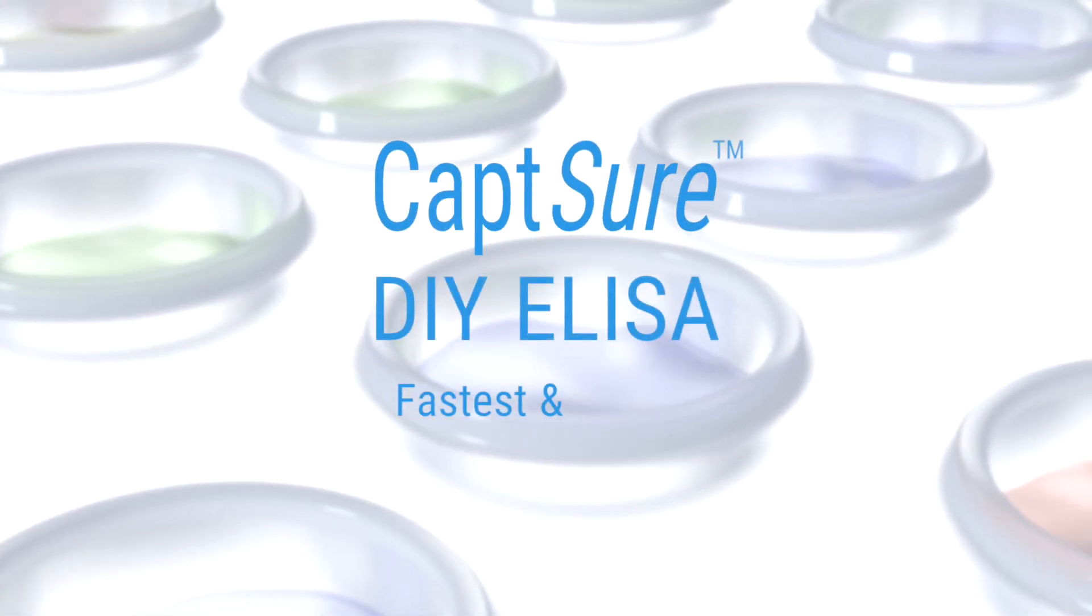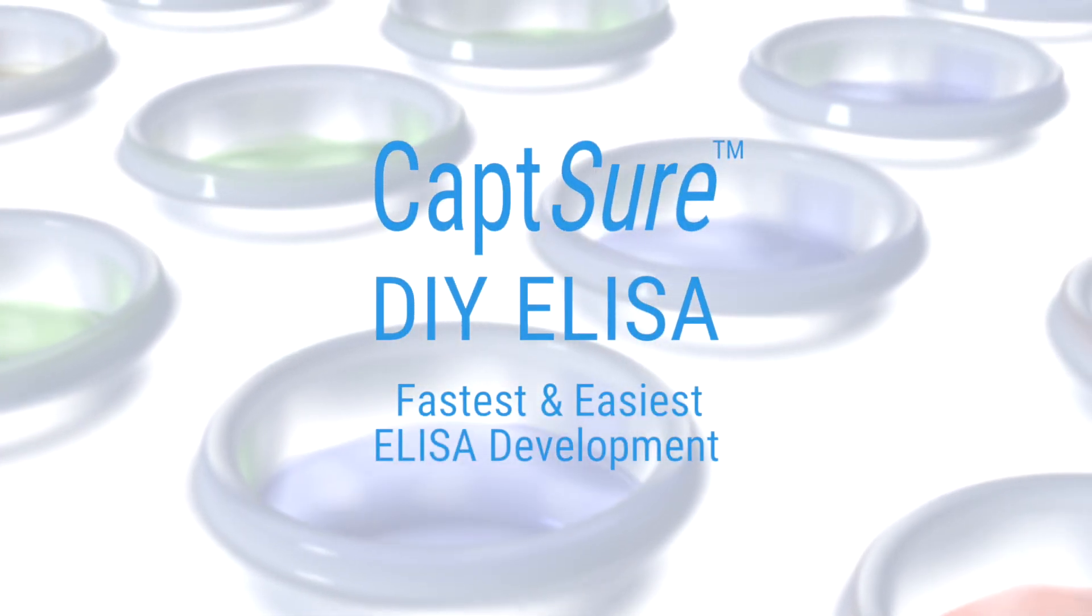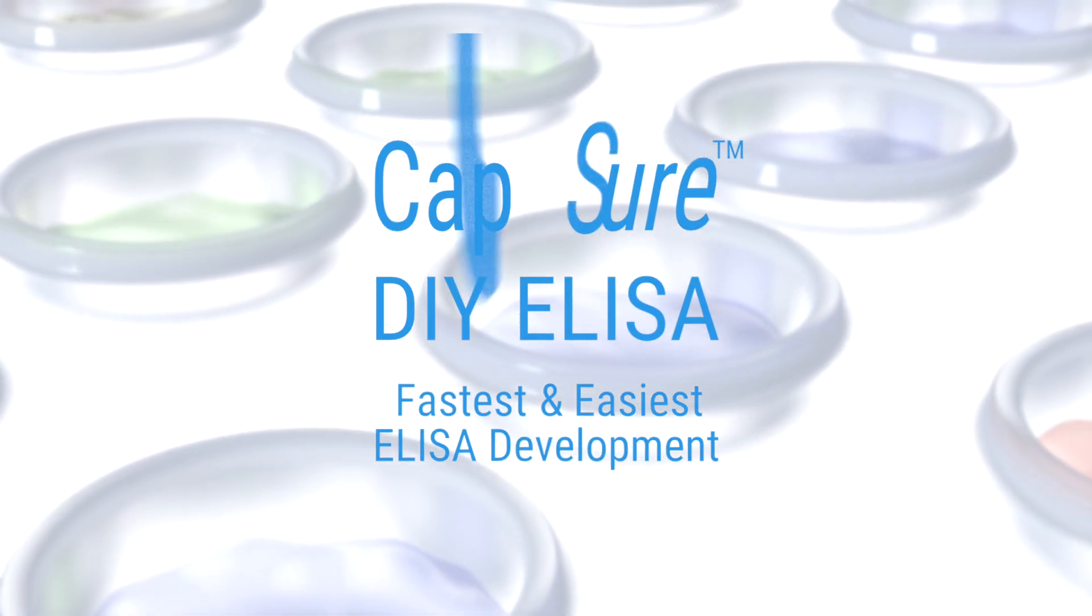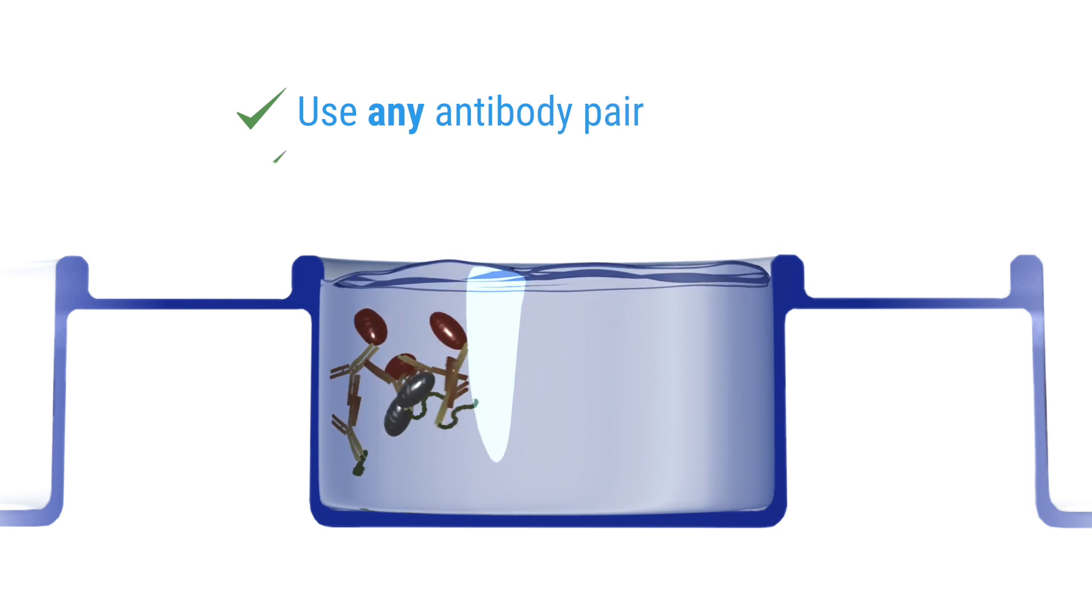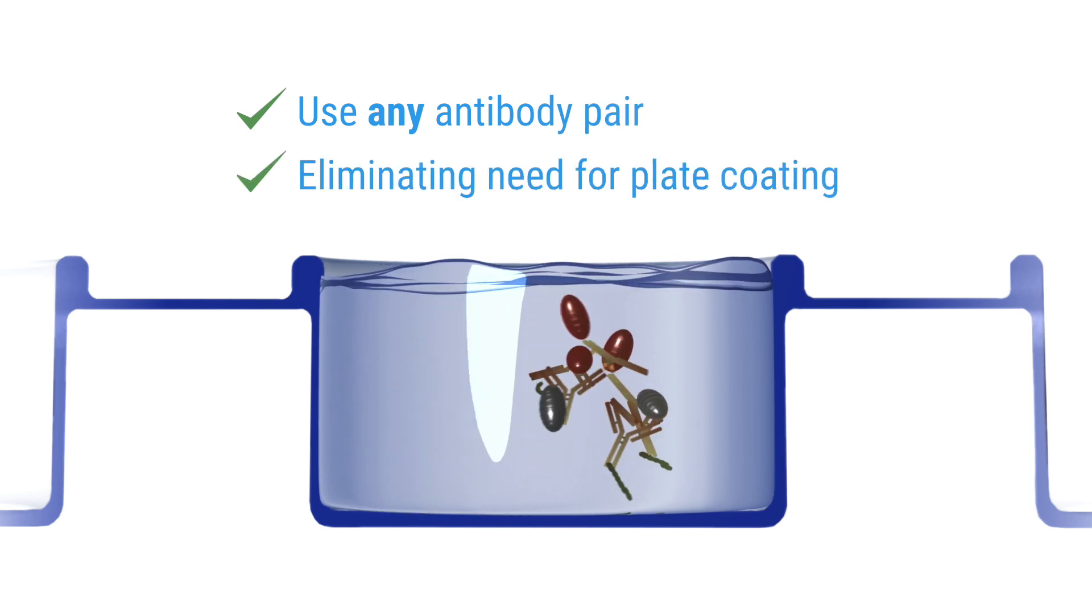With this in mind, Expedion has now introduced CaptSure DIY ELISA, the fastest and easiest ELISA development system that allows the use of any antibody pair while eliminating the need to perform plate coating procedures.